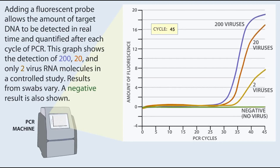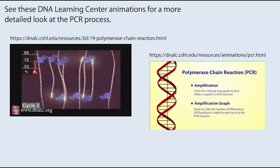This graph shows the detection of 200, 20, and only two virus RNA molecules in a controlled study. Results from swabs vary. A negative result is also shown. See these DNA Learning Center animations for a more detailed look at the PCR process.